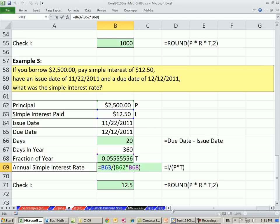So in this video, we saw how to calculate annual simple interest rate, given principal dollar amount for interest in time as a fraction of the year. Next video, we'll learn how to solve for time. See you next video.